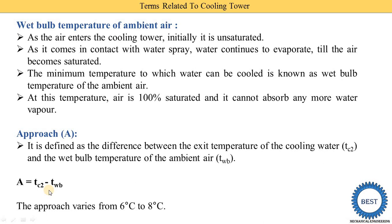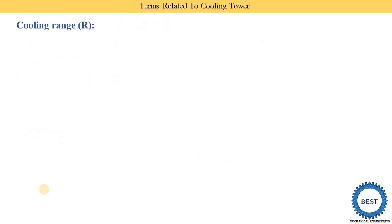For example, suppose the wet bulb temperature of the atmosphere air is 30 degrees. Then we are able to achieve a cooling water temperature of 36 to 38 degrees. If the wet bulb temperature of the atmosphere air is 35 degrees, then the minimum temperature we can achieve for the cooling water is 41 to 43 degrees.